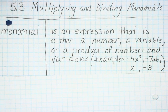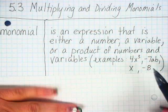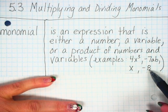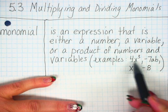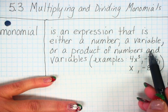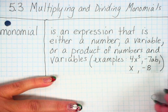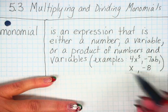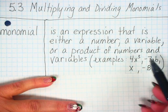We're looking at 5.3, multiplying and dividing monomials. A monomial is an expression that is either a number, a variable, or a product of numbers and variables. For example, this would be just the variable x, this would be just a number like -8, or this would be the product multiplication of 4 times x to the third, or -7 times a times b. So it's multiplying or individuals.